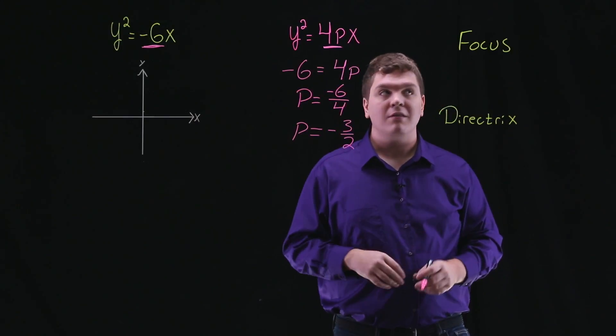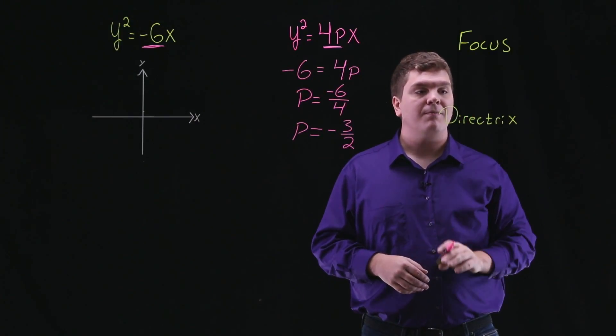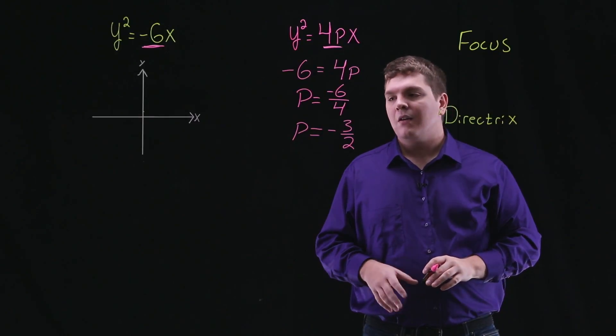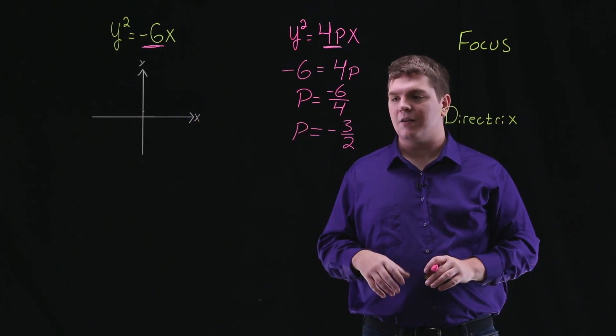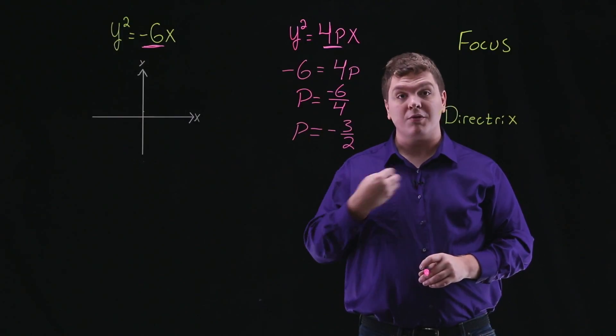So p = -3/2. Now we can use this to find our focus and directrix. Let's also note, as I mentioned earlier, this parabola is going to open towards the left.